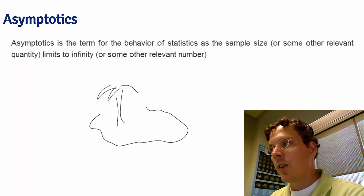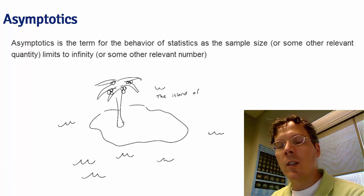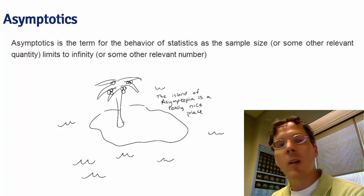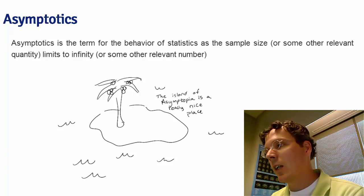Asymptopia is my name for the land of asymptotics where everything works out well and it should work out well because there's an infinite amount of data in the land of asymptopia.